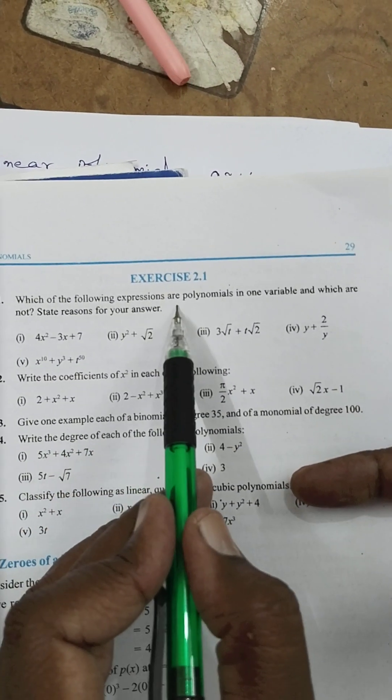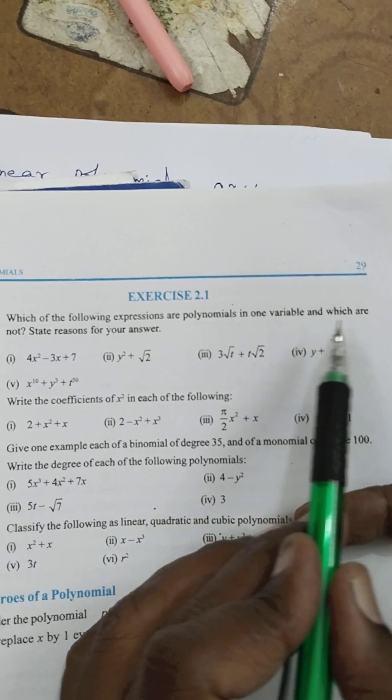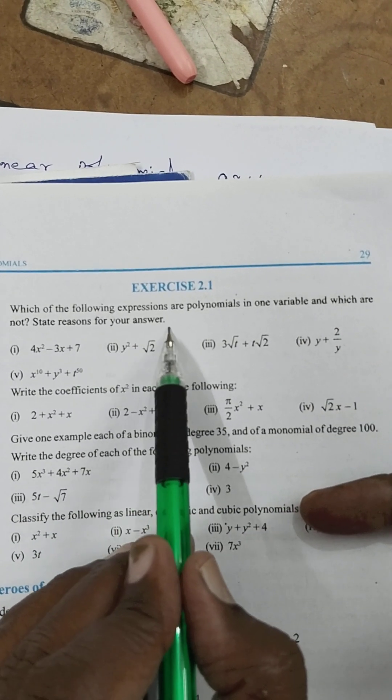Which of the following expressions are polynomials in one variable and which are not? State reason for your answer.